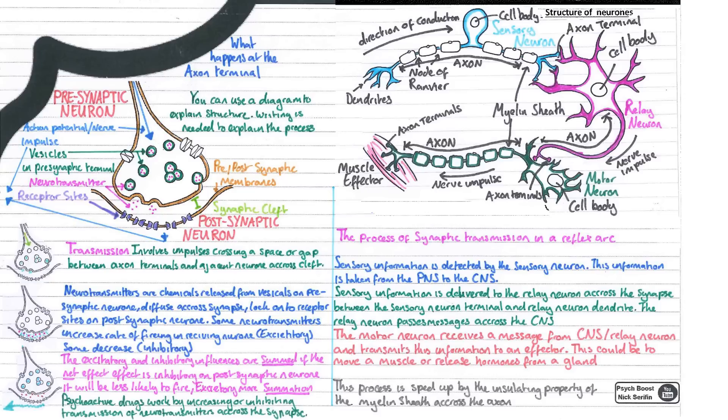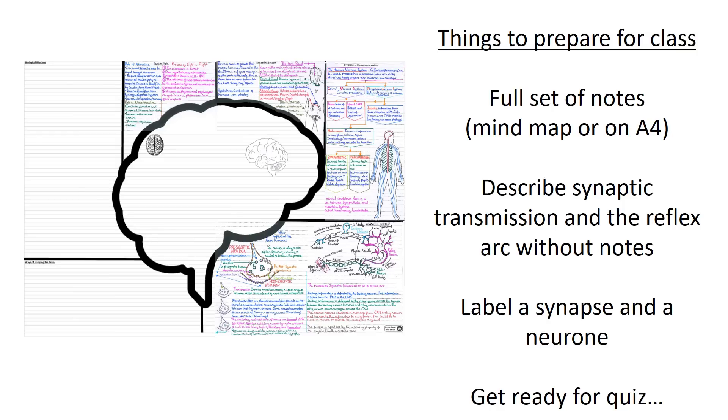Take your time, maybe listen to it again. Make sure your notes are very full and you're able to do this from memory. So this is how our mind map should be looking now - it's really coming together. If you're following along the mind map, take your time, write it out neatly, think about what you're writing before you put it down in pen. You're going to need to be able to describe for me synaptic transmission and the reflex arc without notes during the class, and I also want to see if you can label up the synapse and the neuron from a diagram. Be ready for a quiz when you first walk in. Excellent, I look forward to seeing your notes.